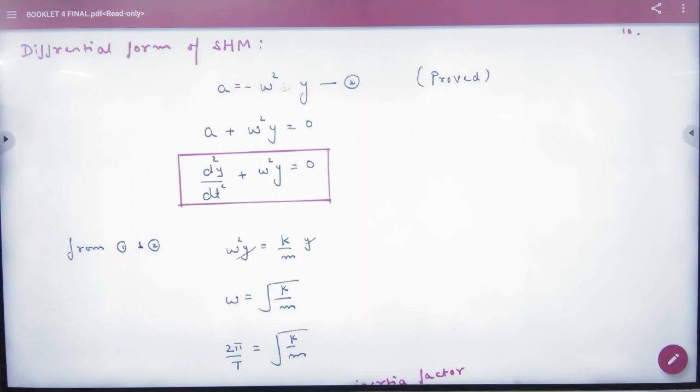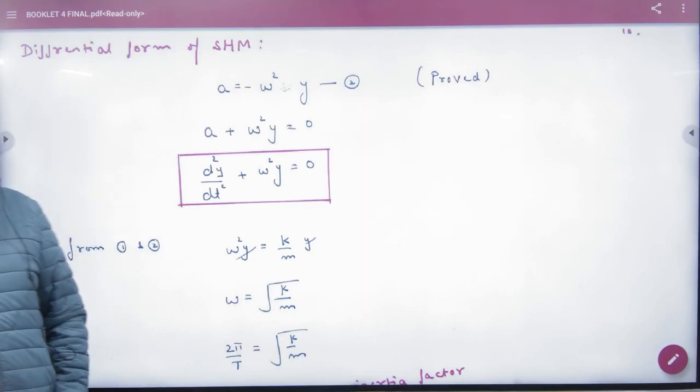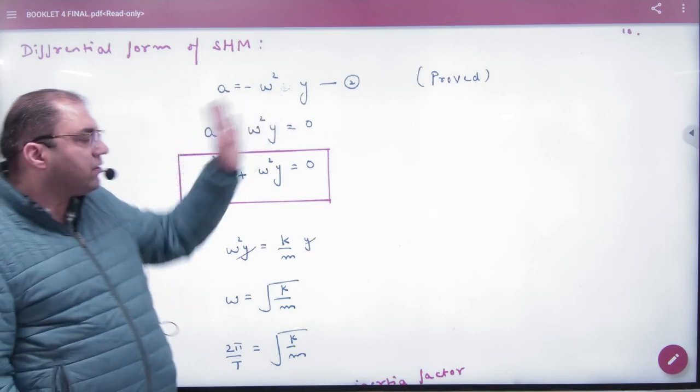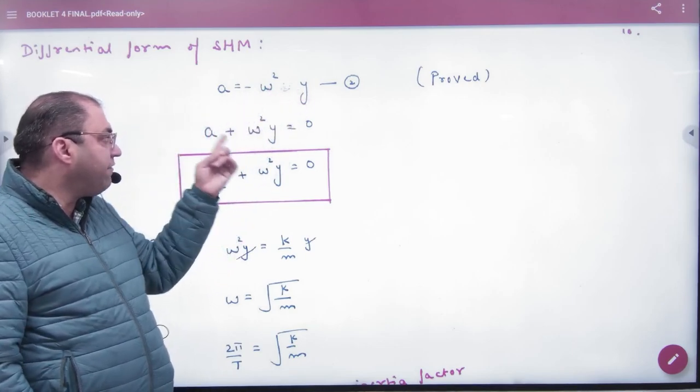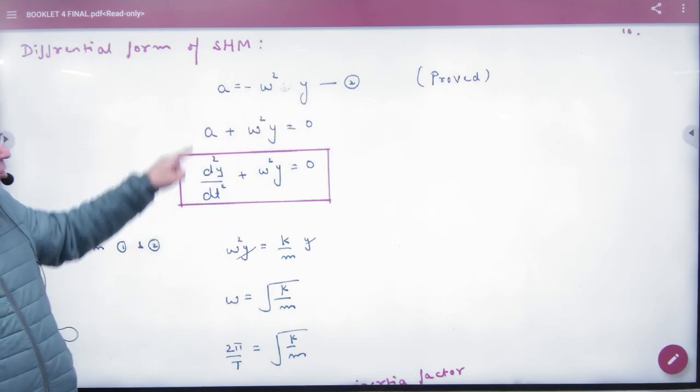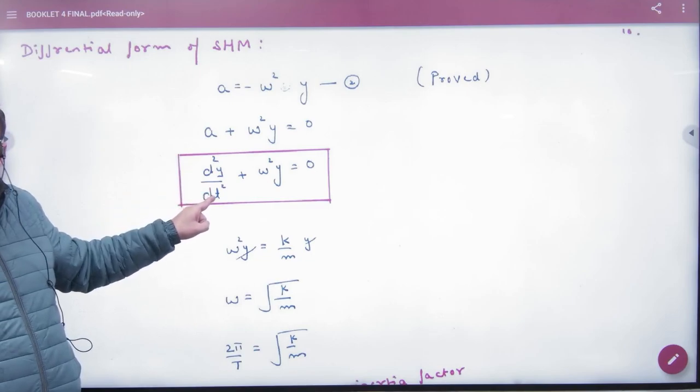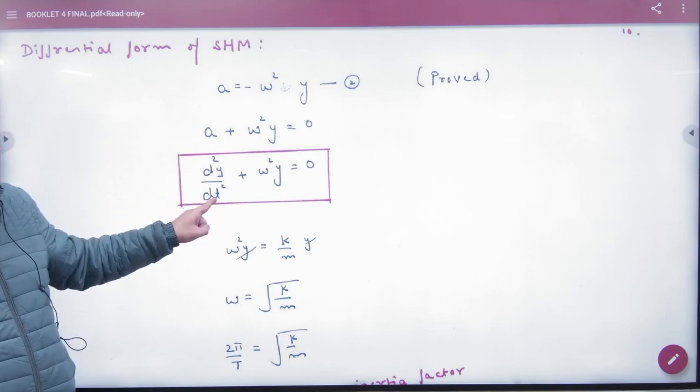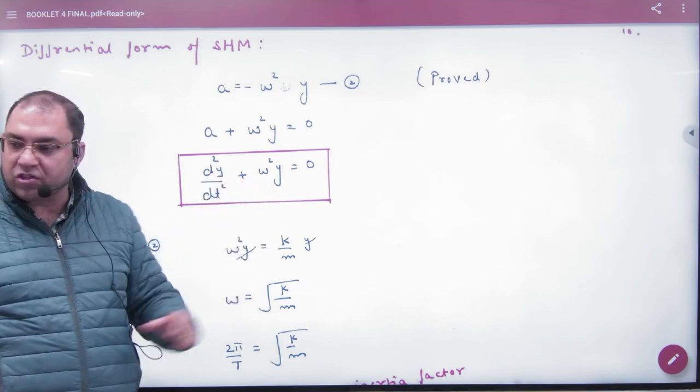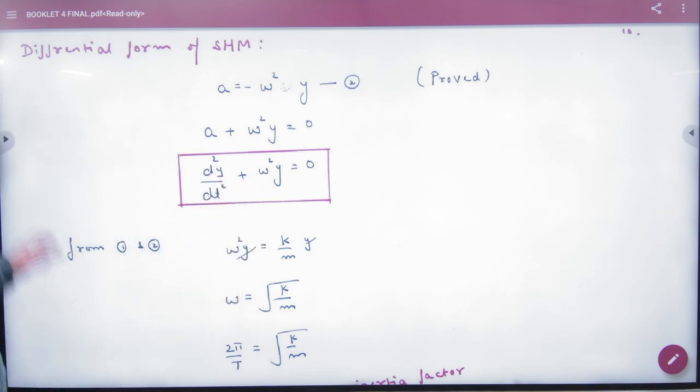The differential equation of SHM: a = -ω²y. Moving ω²y to the left side, and acceleration in kinematics is d²y/dt², the double differentiation of displacement. This equation is SHM's differential form, the differential equation.